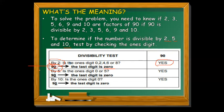Next, divisibility by 5: is the 1's digit 0 or 5? Looking at the given number 90, the 1's digit is 0. Since the 1's digit is 0, which is 0 or 5, it means 90 is divisible by 5.